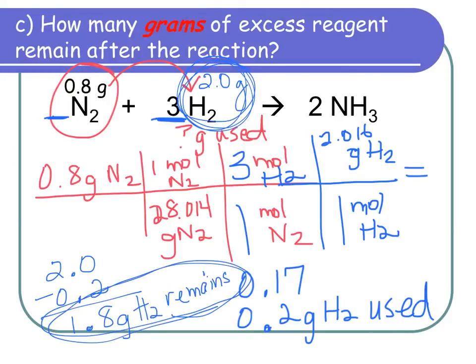That's how to do limiting reactants. If you feel comfortable with those two examples, you can start on page 114. I'll do one more example for those who aren't quite sure — feel free to come back and watch.